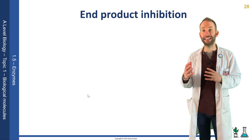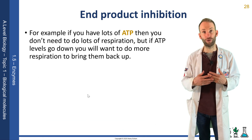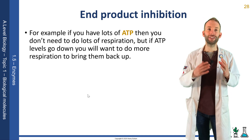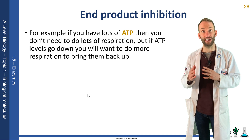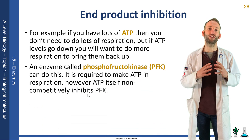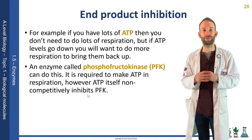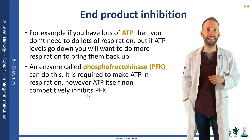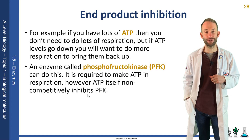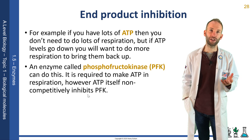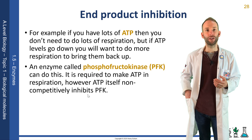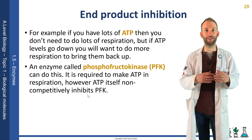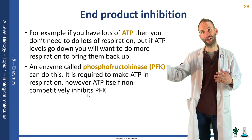If you've got loads of ATP, you don't need to do much respiration anymore. If you haven't got very much, then you need your rate of respiration to increase. There's an enzyme called phosphofructokinase, or PFK, which controls the rate of respiration. ATP is a non-competitive inhibitor of PFK, so it binds to another site on the PFK enzyme. So when ATP is low, not much is bound to PFK, and PFK works really fast, and you make more ATP.